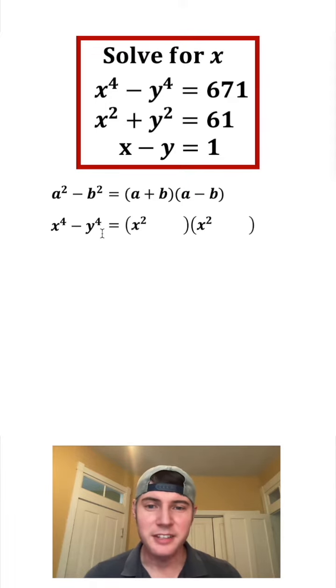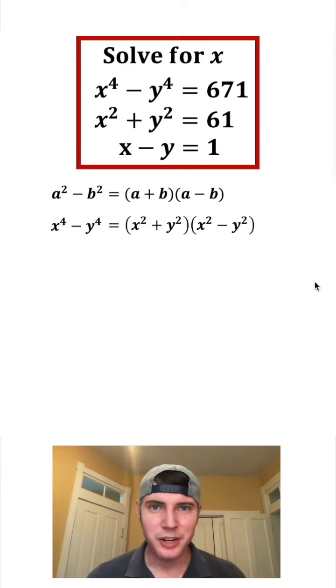We need to find the square root of x to the fourth, that is x squared, and then we're going to do plus and minus, and then the square root of y to the fourth is y squared. Let's copy both of these down.